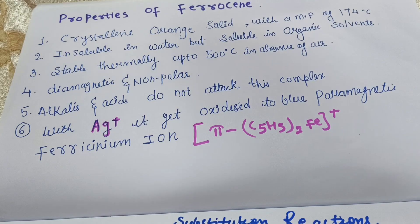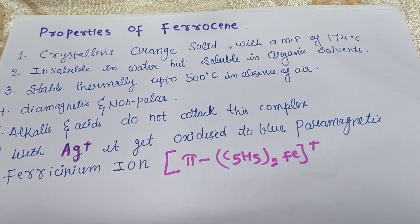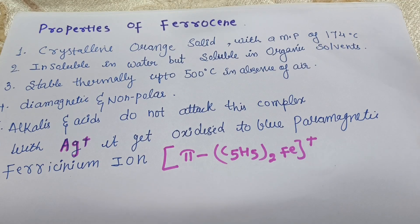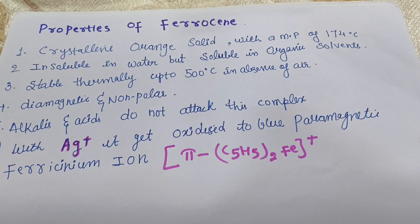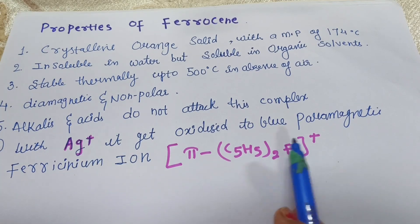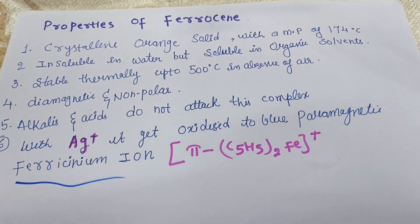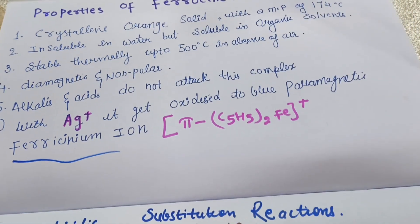Some physical properties of ferrocene: it is a crystalline orange solid with a melting point of 174°C. It is insoluble in water but soluble in organic solvents. It is thermally stable up to 500°C in the absence of air. It is diamagnetic and non-planar. Alkali and acids do not attack this complex, but with silver ions it can be oxidized to the blue paramagnetic ferricinium ions.